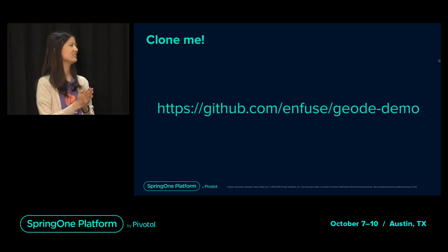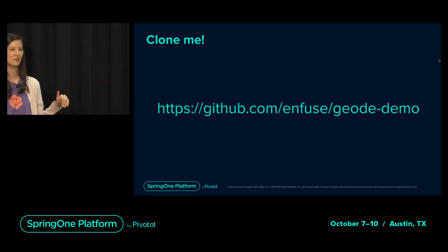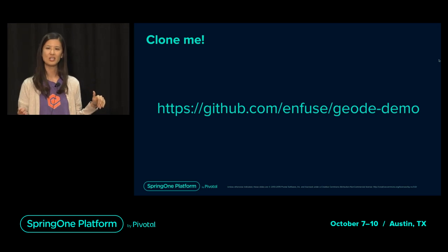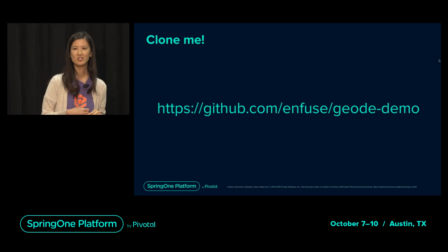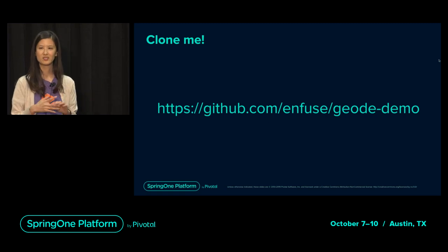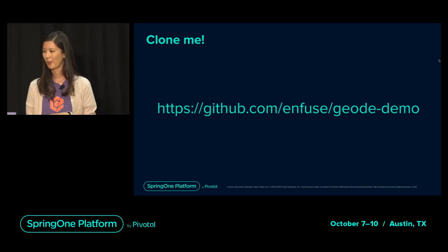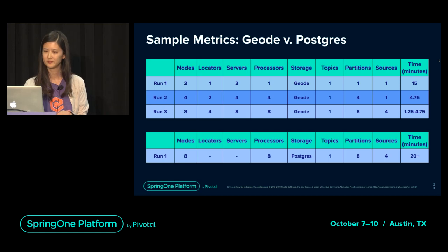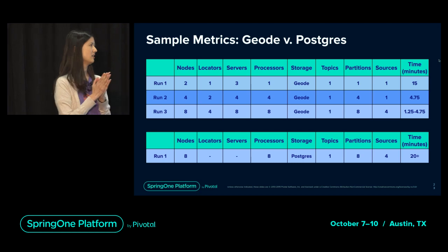If you want to play around with this repo, check it out at github.com/infuse/geode-demo. You can clone it down — it's set up using Minikube so it runs on pretty much any Kubernetes cluster on any cloud provider of your choosing. It uses Spring Boot, Gradle, Spring Cloud Stream, and the Spring Geode starter.